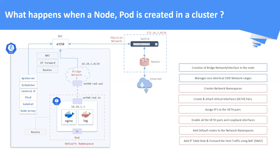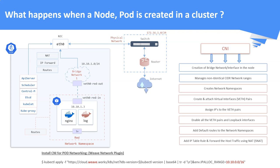As discussed, Kubernetes does not provide a native solution for Kubernetes networking. So who creates and manages all these things for the Kubernetes objects? It is the container networking interfaces, or CNI plugins, that create and manage all of this. If you remember, in one of our previous lectures, we installed these plugins as part of our cluster creation. A sample snippet is shown here — we installed the Weave network plugin as our container networking interface.